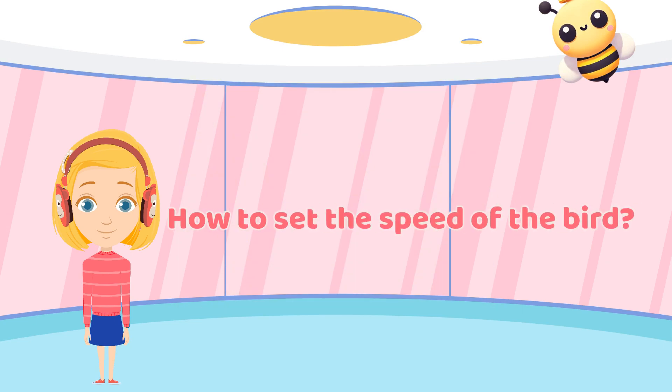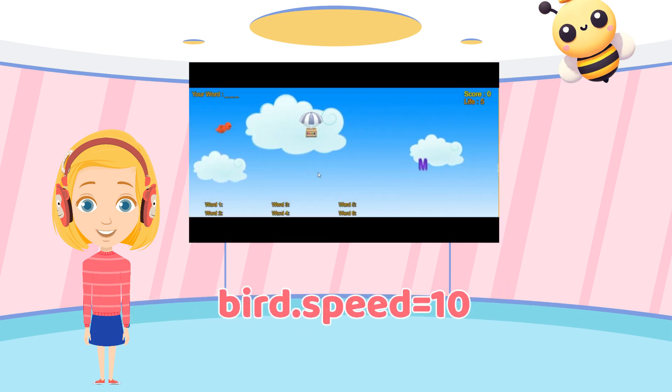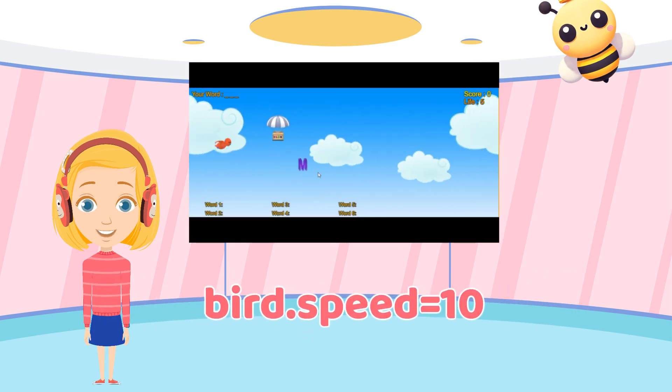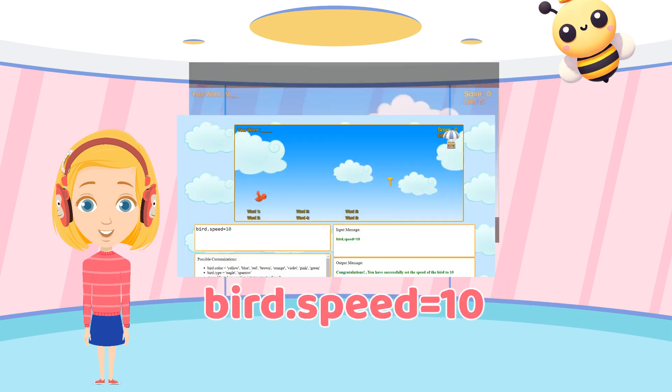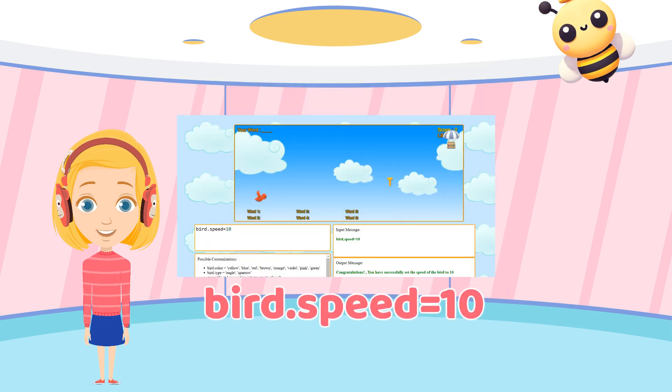Bella, now show me how to set the speed of the bird. Setting the speed to 10, you need to code bird.speed equal to 10.